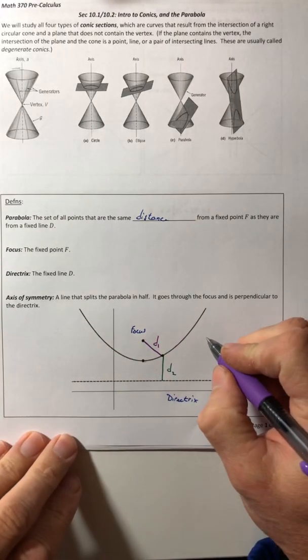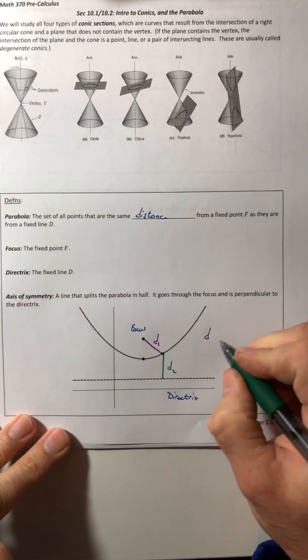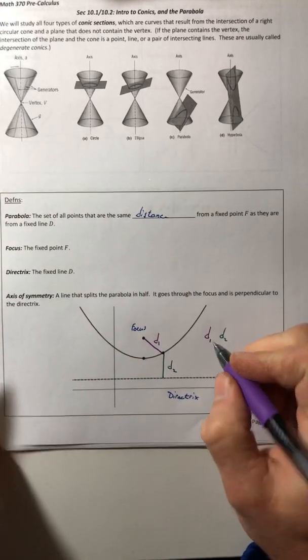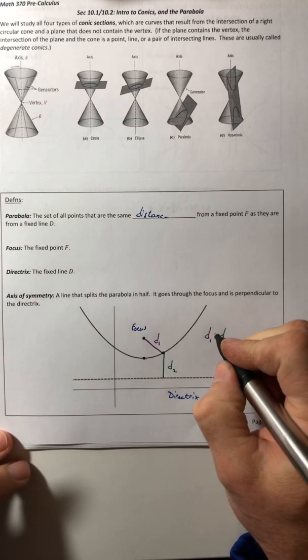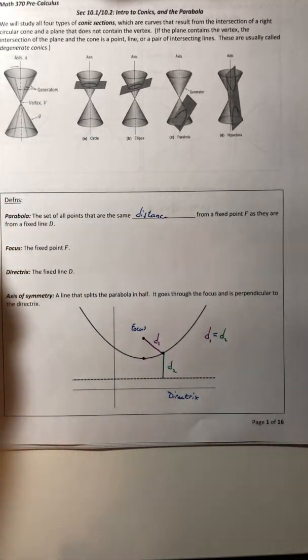No matter where I choose it on this parabola, so D1 and D2, if you actually measured those two distances, they are equal to each other. So that's the definition for your parabola.